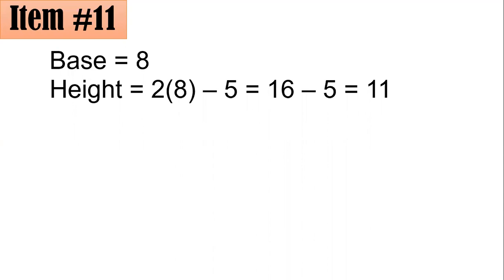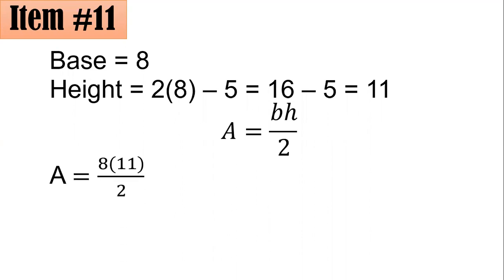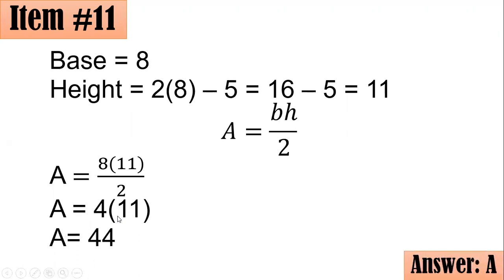And since you now have the base and the height, you can compute it using the formula A equals base times height all over 2. That's A equals 8 times 11 all over 2. That's 4 times 11, because 8 divided by 2 is 4, and 4 times 11 is 44. Hence, the area is 44 square units.